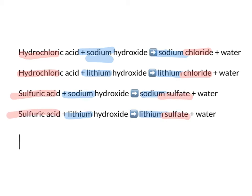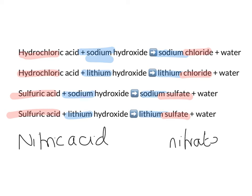If we have nitric acid, then our salt will end up being a nitrate. If we had magnesium hydroxide, then our salt would be magnesium something — magnesium chloride, magnesium sulfate, or magnesium nitrate. And in all of these examples, water is also being made.